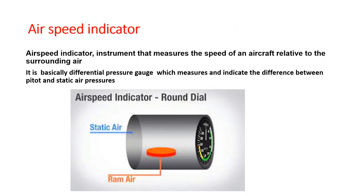The airspeed indicator is an instrument that measures the speed of an aircraft relative to the surrounding air. It is basically a differential pressure gauge which measures and indicates the difference between pitot and static air pressures.